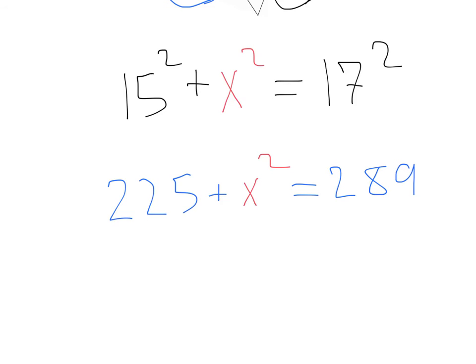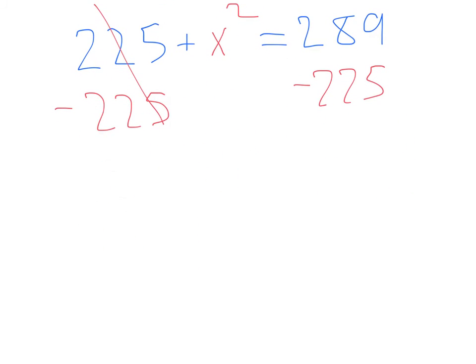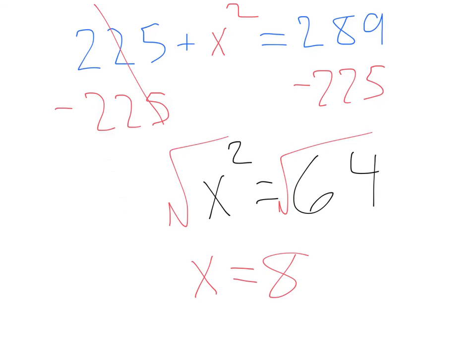Let's go ahead and keep solving for X. First, let's get X by itself over here. So, we're going to subtract 225 from each side of our equal sign. That's going to leave us with X squared equals 289 minus 225 is going to be 64. Now, we have our X squared. Let's take the square root of each side. That'll just leave us with an X on the left. The square root of 64 is 8. So, X equals 8. Thank you, Pythagoras.